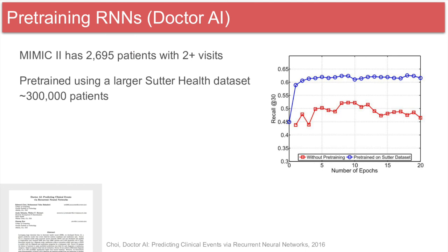Another interesting result from this work is when they evaluated the model on the public MIMIC dataset. They found that training on MIMIC alone versus pre-training on their large dataset and then training on MIMIC significantly improved performance. This is shown in blue using pre-training, and red without pre-training. The key takeaway here is that more data helps.